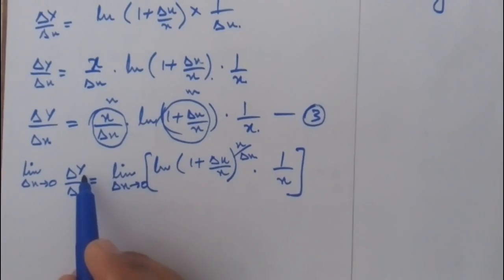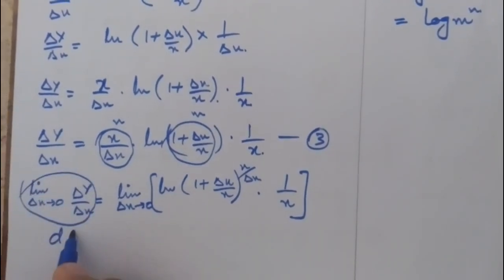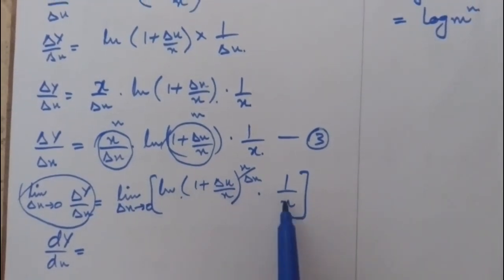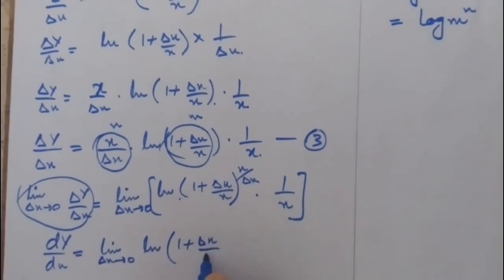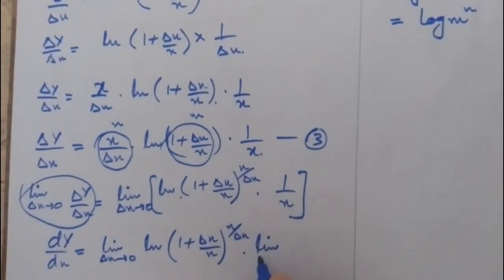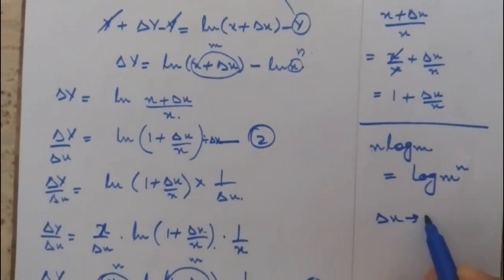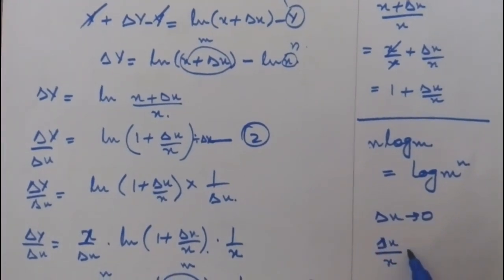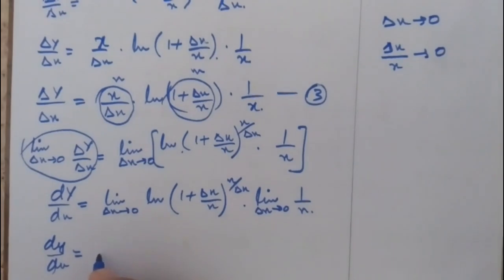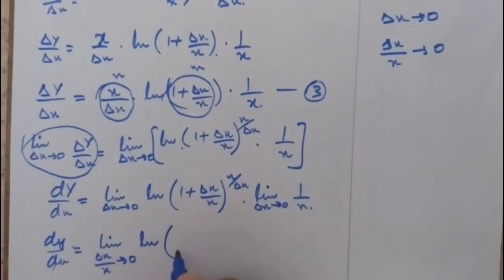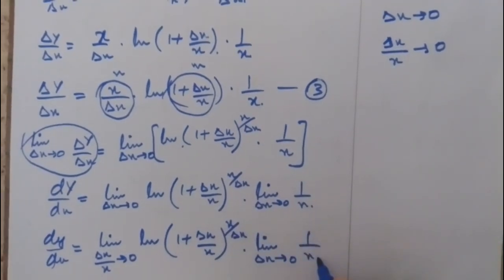Now as limit del x tends to 0, the change in y with respect to change in x becomes so small, and if we denote this small change with small d, then this expression becomes dy by dx, which equals limit del x tends to 0 of ln(1 plus del x/x) whole power (x upon del x), times limit del x tends to 0 of 1 upon x. Now if del x approaches 0, then del x upon x also approaches 0. So we can write dy by dx with the limit del x/x approaches to 0 of ln(1 plus del x/x) whole power (x upon del x), times limit del x tends to 0 of 1 upon x.